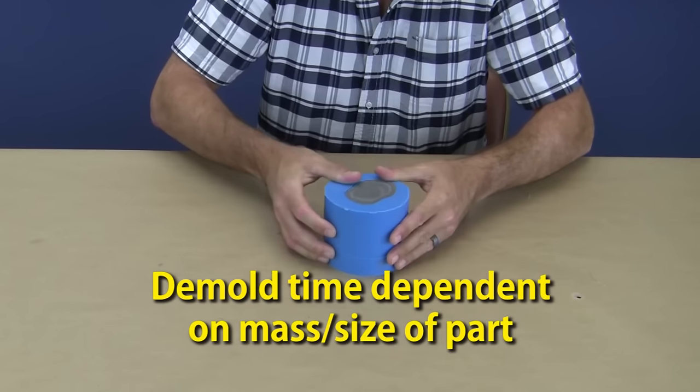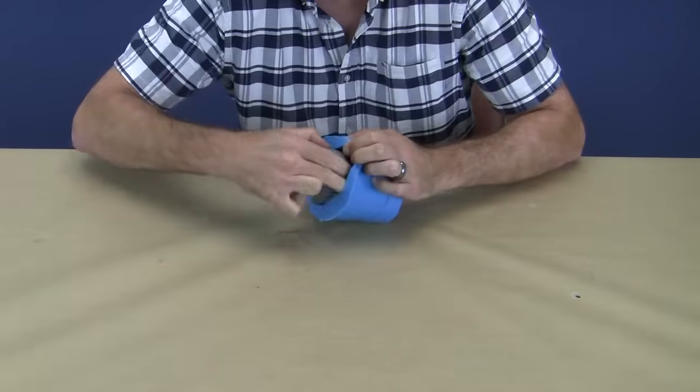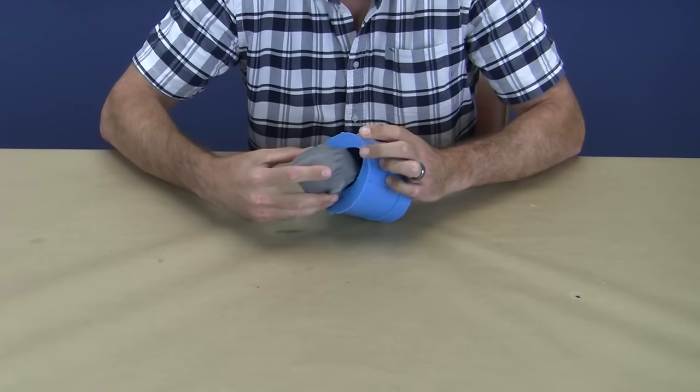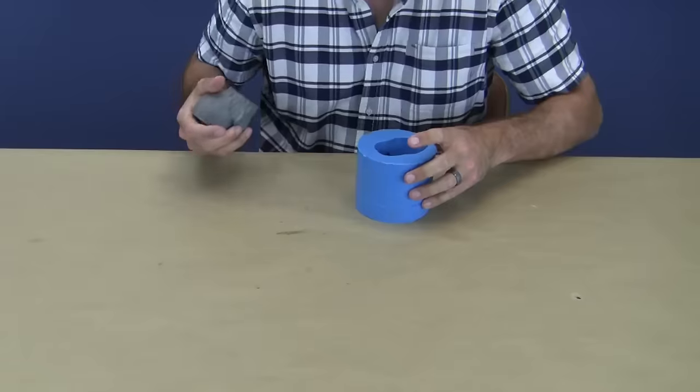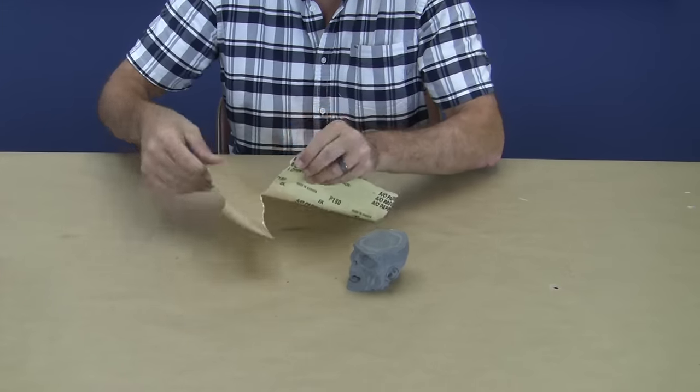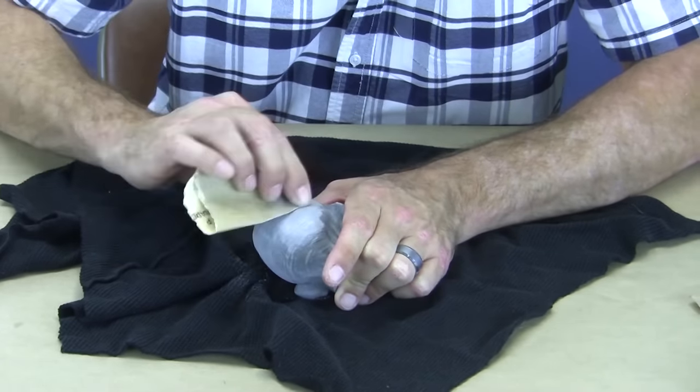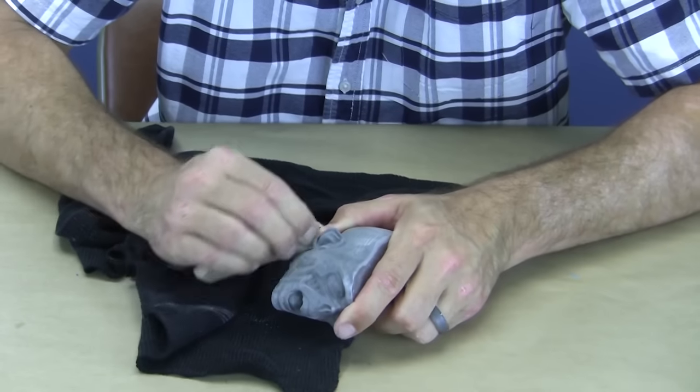After a few hours, we can demold the part from the mold. The side walls are flexed and the skull is carefully pulled out, trying to avoid any unnecessary stress on the mold. You'll notice the cured part appears as a dull gray after demolding, but something amazing happens when you begin to sand and burnish the surface. It begins to look more like a metal surface and can create some really great effects.